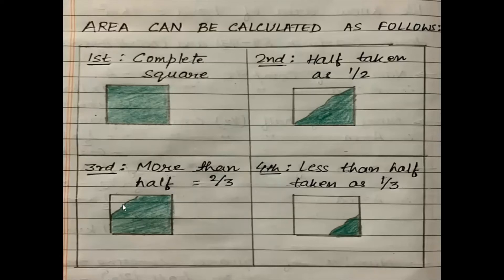Third one is covered more than half which we write like 2 by 3. The last one is less than half. We write as 1 by 3.